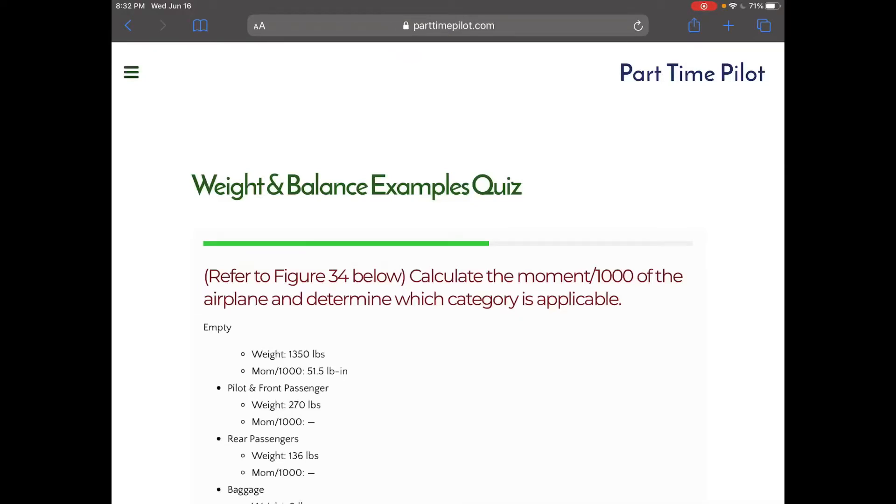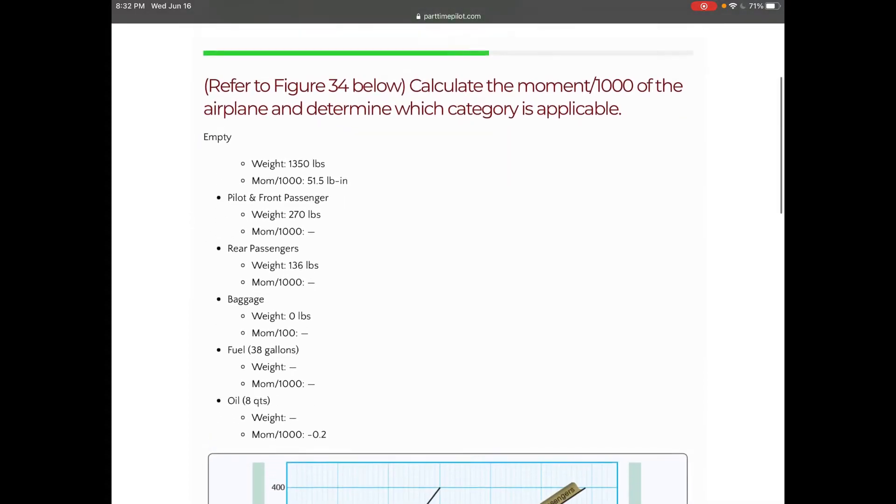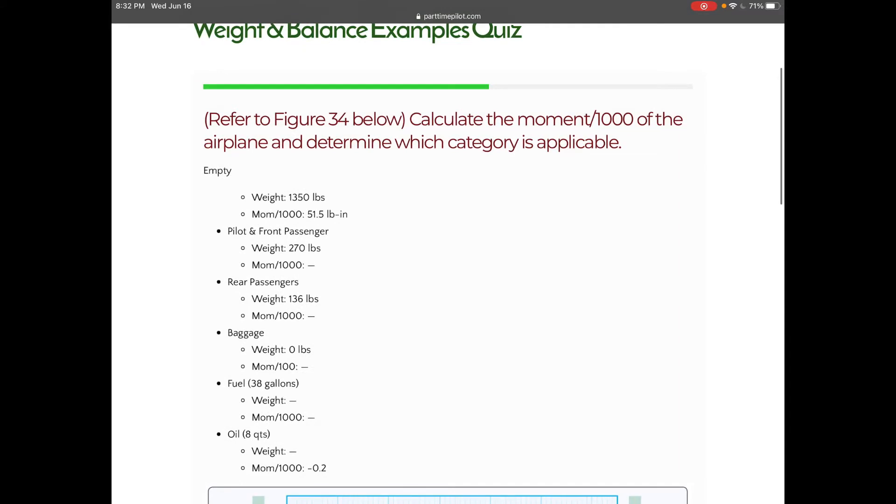Some of the questions you'll get on weight and balance have a little bit different figure than what you might be used to. Usually you might be used to saying okay, we have a weight at a location and we have an arm length for that location, so we're going to take the weight, multiply it by the arm, we're going to get a moment.